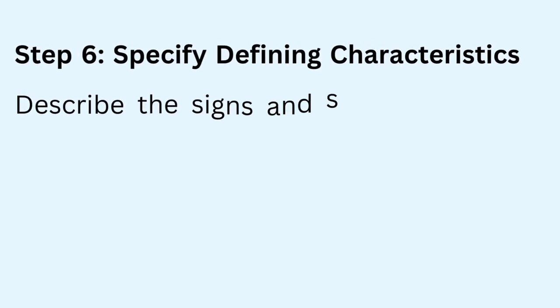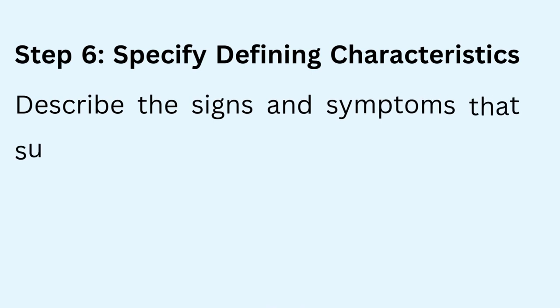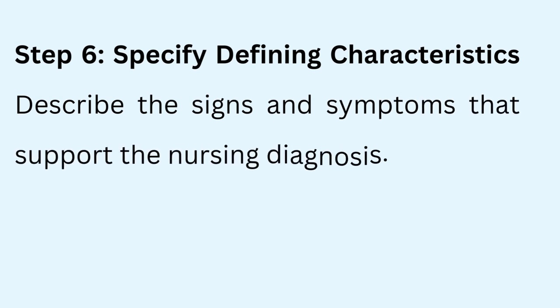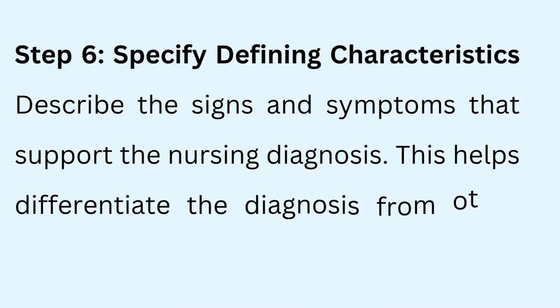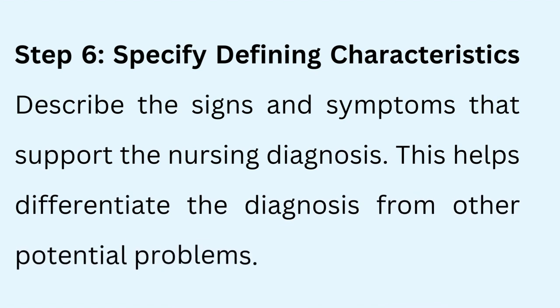Step 6: Specify defining characteristics. Describe the signs and symptoms that support the nursing diagnosis. This helps differentiate the diagnosis from other potential problems. For the example above, defining characteristics might include increased respiratory rate, decreased oxygen saturation, productive cough, and auscultation findings of crackles.